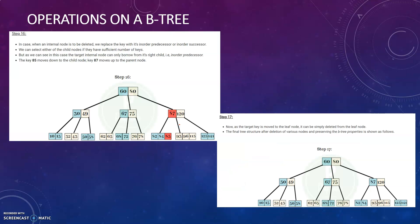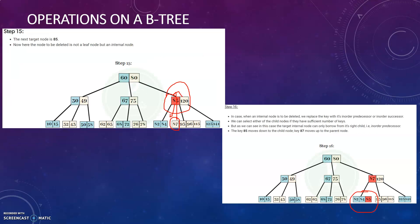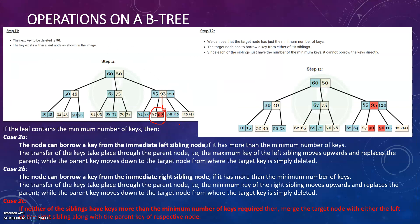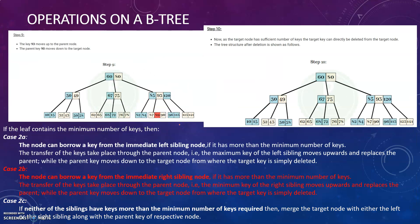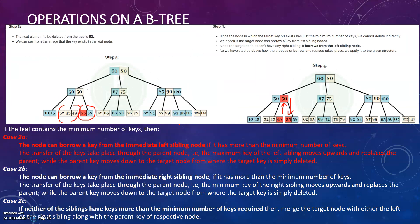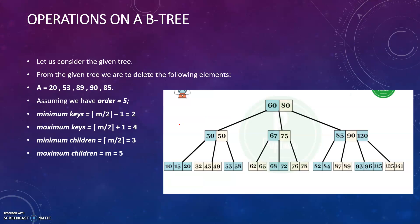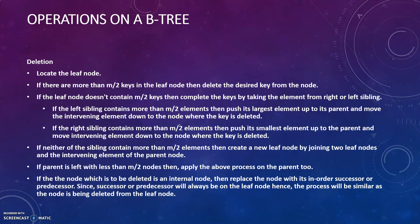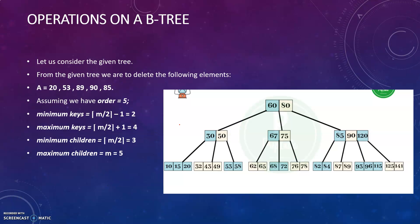That is how you delete a node from a B-tree. We have seen different options based on the different cases. The main important thing is you have to follow the minimum criteria.